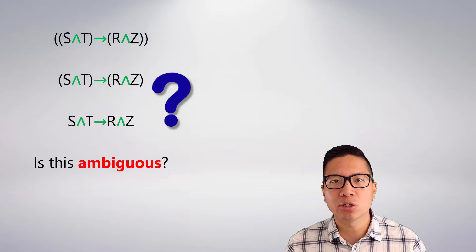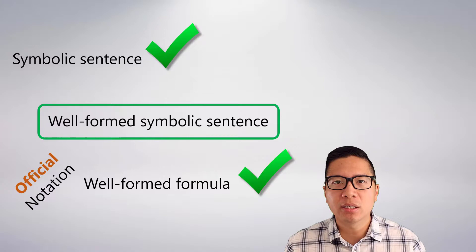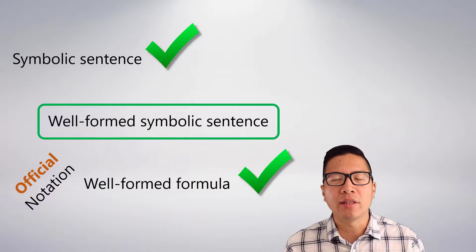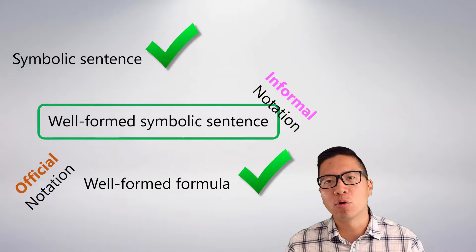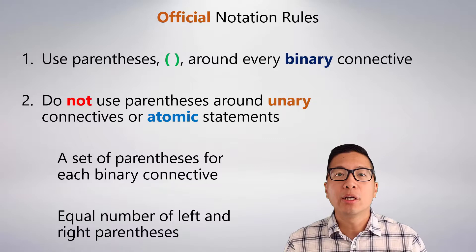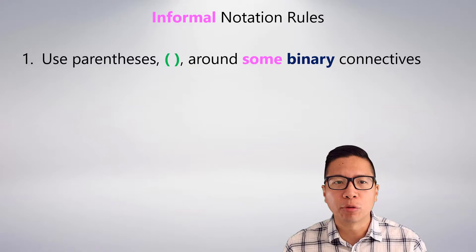So what we're going to consider are well-formed symbolic sentences. They are symbolic sentences that are well-formed but don't have all the extra brackets of official notation. The key feature of a well-formed symbolic sentence is that they are not ambiguous — there are not multiple ways of interpreting the statement. Anything that's a well-formed symbolic sentence we're going to call informal notation. The rules for informal notation are essentially a relaxed version of the official notation rules.